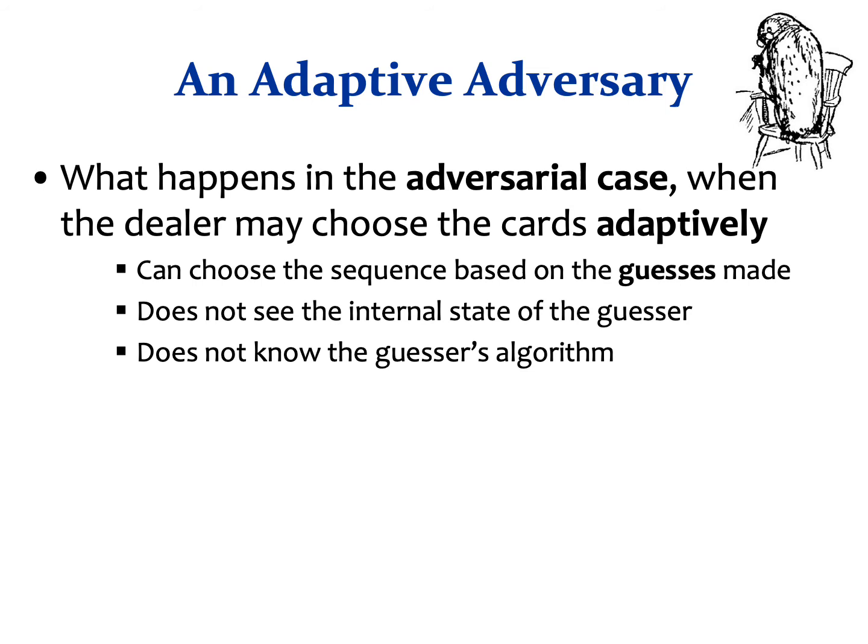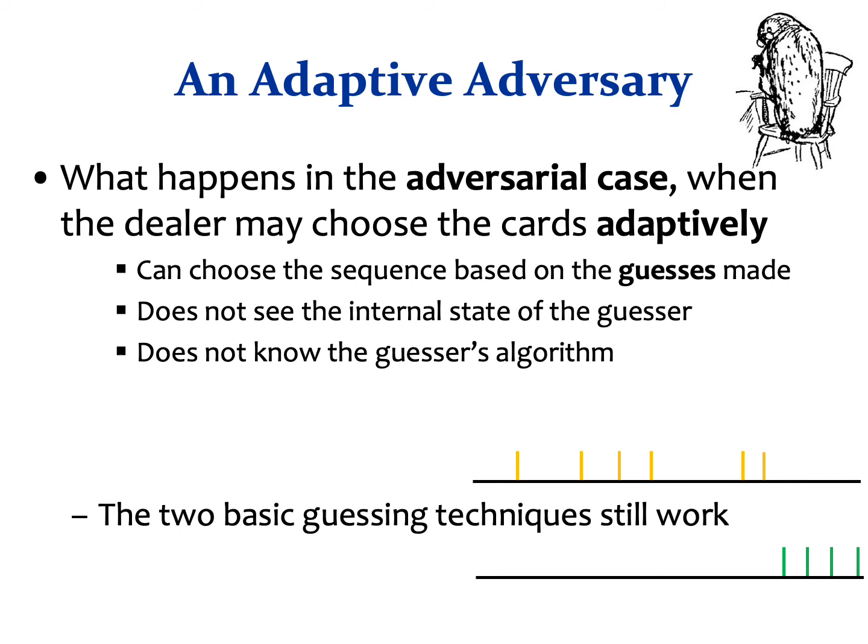This leads us to the most prominent case, where the dealer may draw cards adaptively in an adversarial manner. The dealer may choose cards based on past guesses, and we assume the dealer doesn't see the guesser's memory or randomness, and is not aware of the guesser's algorithm. Observe that the two basic guessing techniques still work — both focusing on a subset and remembering the last cards — meaning we can still get ln n correct guesses. However, these techniques are no longer compatible, as there exists an adaptive dealer that moves guessed cards to the bottom of the deck, diminishing the benefits of using the two methods.